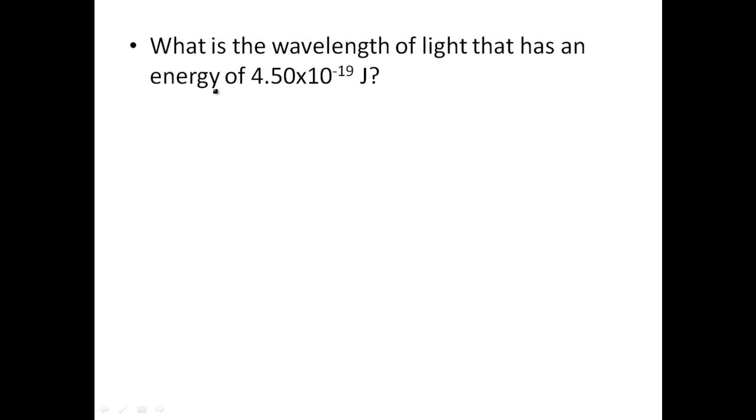Here we go. What's the wavelength of light that has an energy of? So, we're starting with energy because we know that value. Energy equals Planck's constant times frequency. Energy is 4.50 times 10 to the negative 19 joules equals Planck's constant, 6.63 times 10 to the negative 34th joules second times frequency. So, divide both sides.